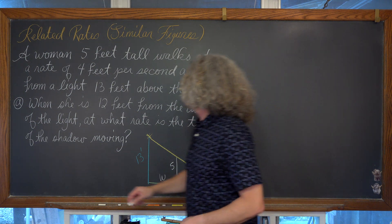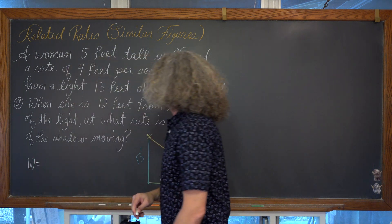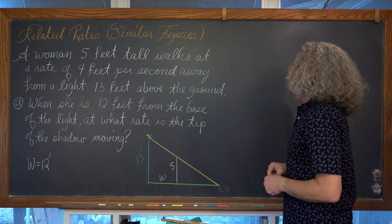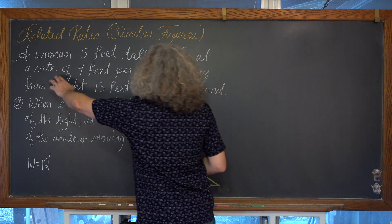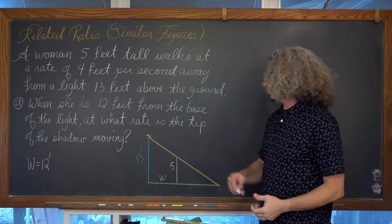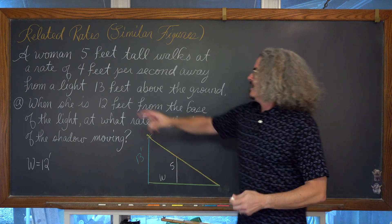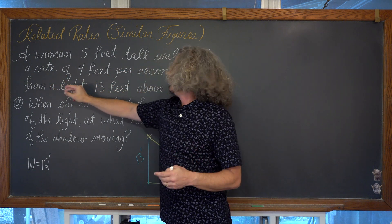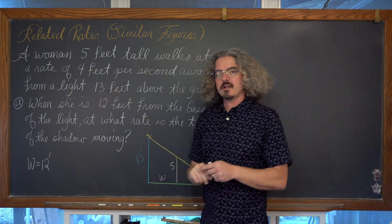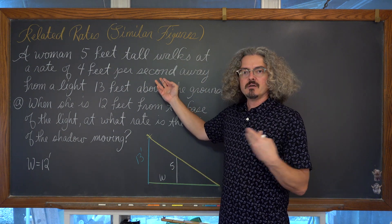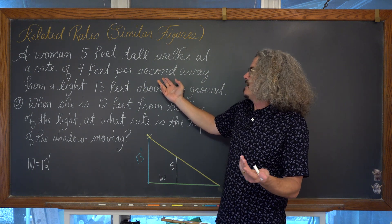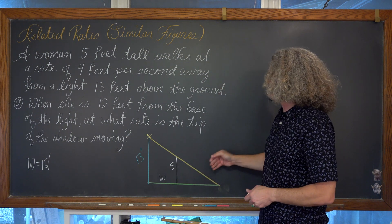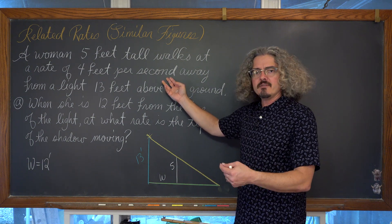For part A, w equals 12 feet — we're writing down all the information given and asked for. She's walking away at a rate of 4 feet per second. Feet per second is an expression of rate, and 4 is not a measurement of length — it is a measurement of movement, specifically velocity. Since she's moving to the right, that velocity would be positive.